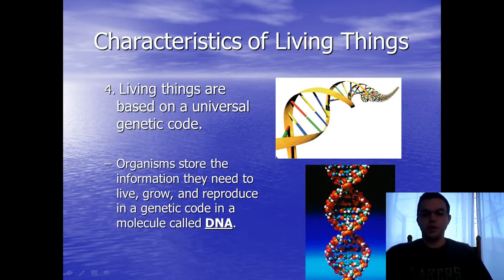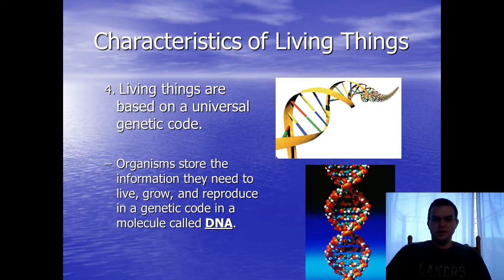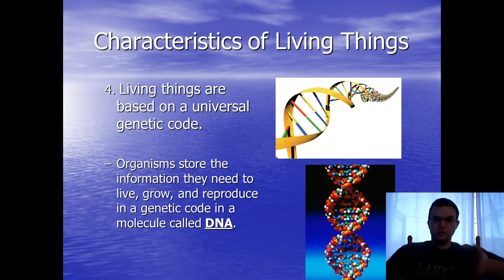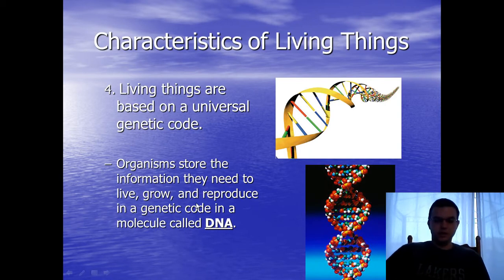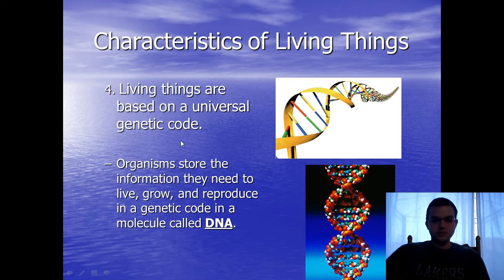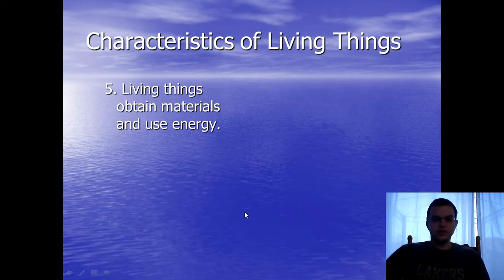I liken DNA to a cookbook. The DNA is the big cookbook, and the individual recipe is like the protein. You find the gene you need — the gene has all the instructions for making that substance. You take the raw ingredients, mix them together, and you have a protein that will now perform a specialized task. All living things need to have a universal genetic code.